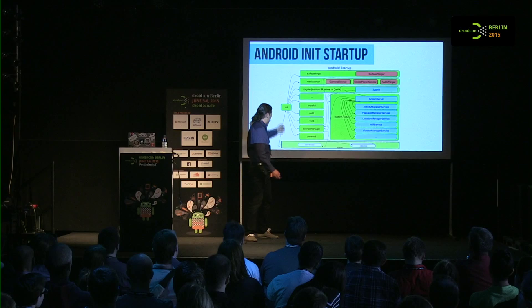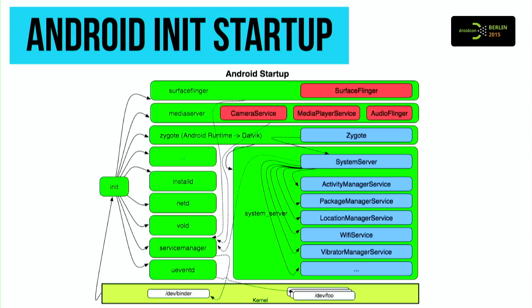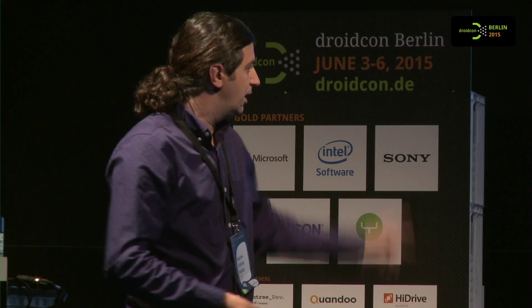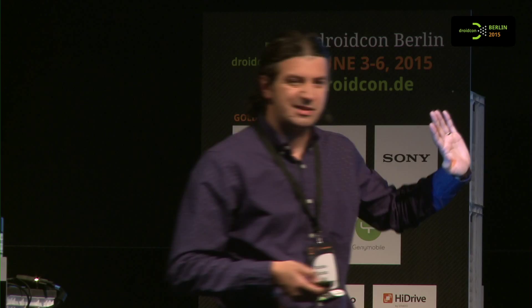If somebody hypothetically asked me how you'd attack a phone from outside, I'd say: create a service that sniffs the platform, then edit the init RC file and add something like 'start service [pathname], class main' — that means it'll be started with all the other services at the same time. Just create a simple service that sniffs data, with system permissions, copy it there, modify the init, and you have it. In order to do this, you have to understand the platform. Go to your phone and look at the init dot RC file in the root — you're going to see exactly the startup of the platform.